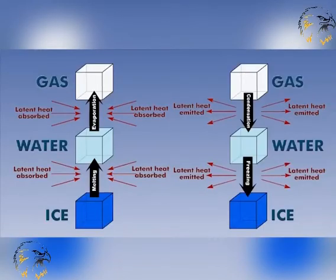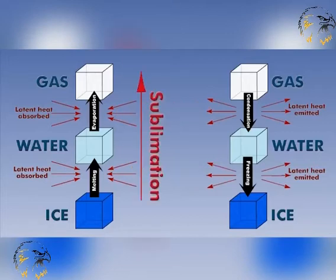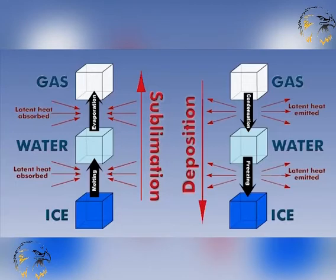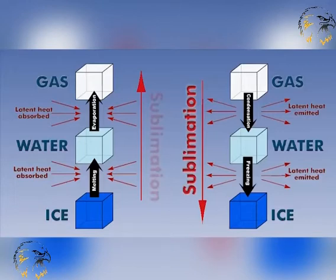There are two other phase changes that we need to mention. These are less common in the atmosphere than condensation or evaporation, but nevertheless are important. When water goes straight from the solid to vapour state, we call it sublimation. Strictly speaking, when water goes from vapour to the solid state directly, it is called deposition, but in meteorology, this change is also called sublimation.